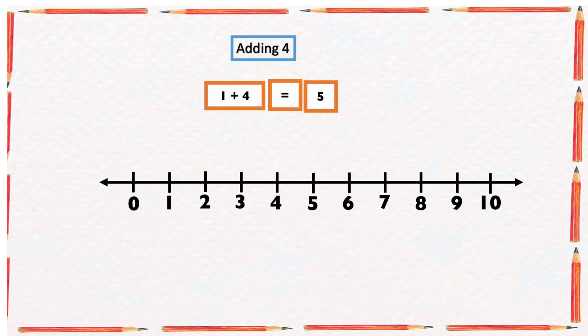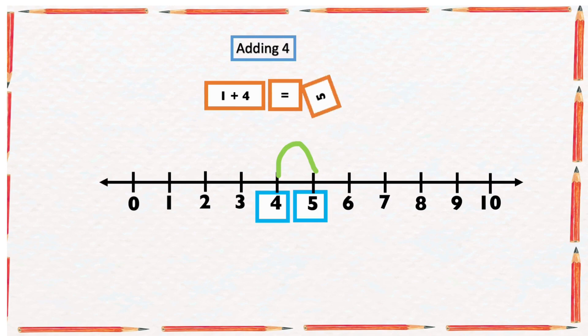By starting from the bigger number, which is four, and counting only one number forward — one — we still get the same answer: five. So the sum of one and four is five.